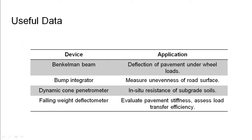Coming to the useful data: a Benkelman beam is used to measure the deflection of pavement under wheel loads. A bump integrator is used for measuring the unevenness or the roughness of the road surface.